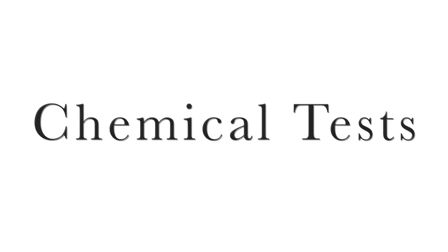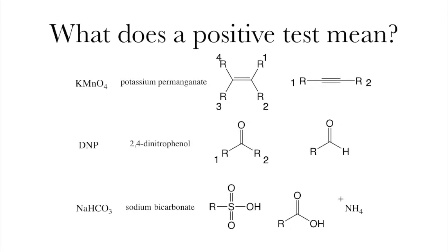Now normally we would be done here, but we still have some chemical tests left to do on A, B, and C. The three chemical tests that we are going to be doing are potassium permanganate, which can show you alkenes and alkynes.